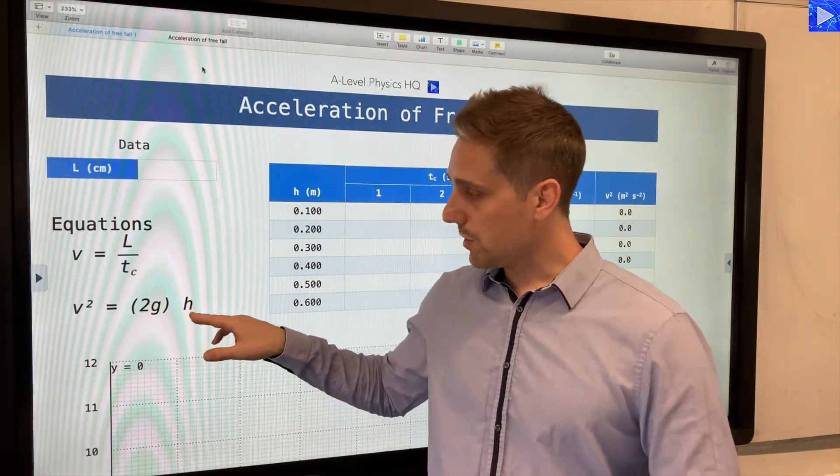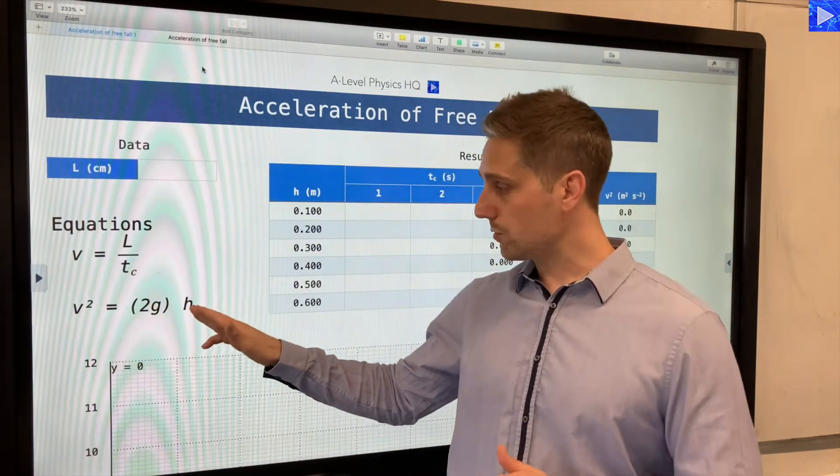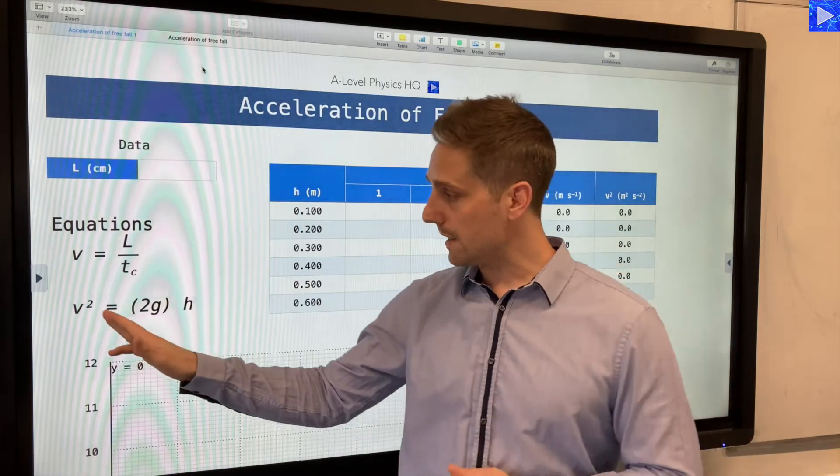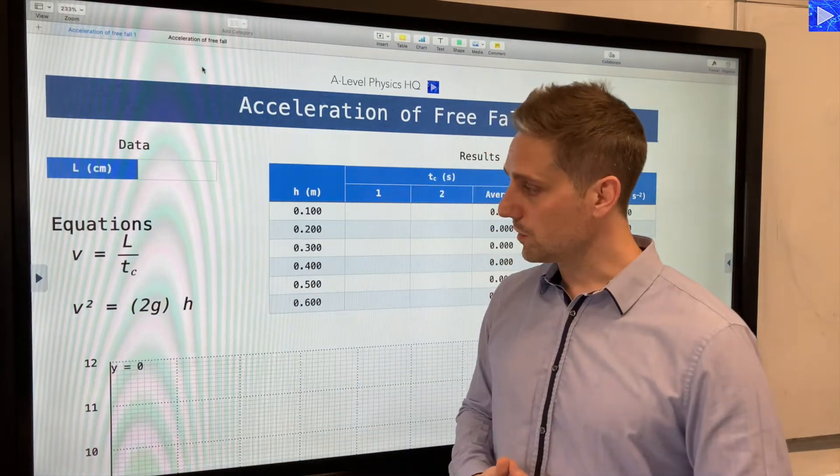This is our equation - it's a linear relationship between v² and h. h was our independent variable and v² is going to be our dependent variable plotted on the y-axis.